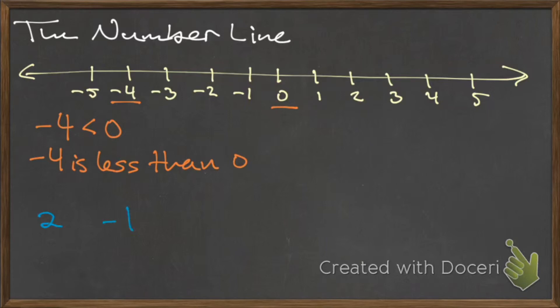To compare two and negative one, we see that two is farther to the right on the number line than negative one, so we would write this as two is greater than negative one.